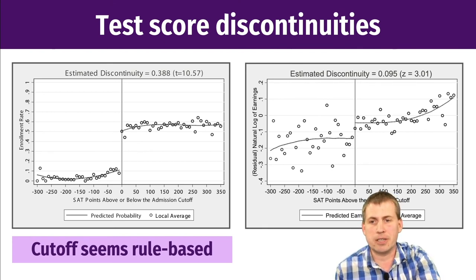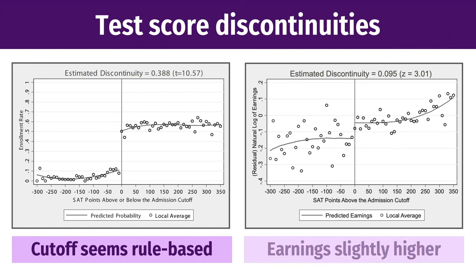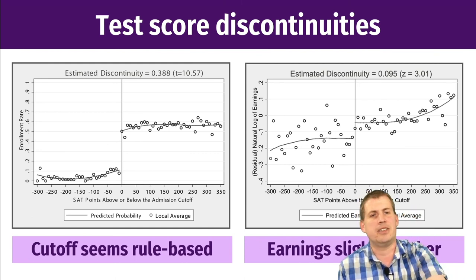Looking at outcomes, there is slightly higher average income for people who were above the cutoff — those accepted into flagship universities. The size of that gap in log earnings means that attending the flagship university causes a 9.5% increase in earnings compared to those who didn't go. Going to UGA boosts your earnings; going to UVA boosts your earnings. GSU counts as a flagship university, so you'll all get higher earnings too.